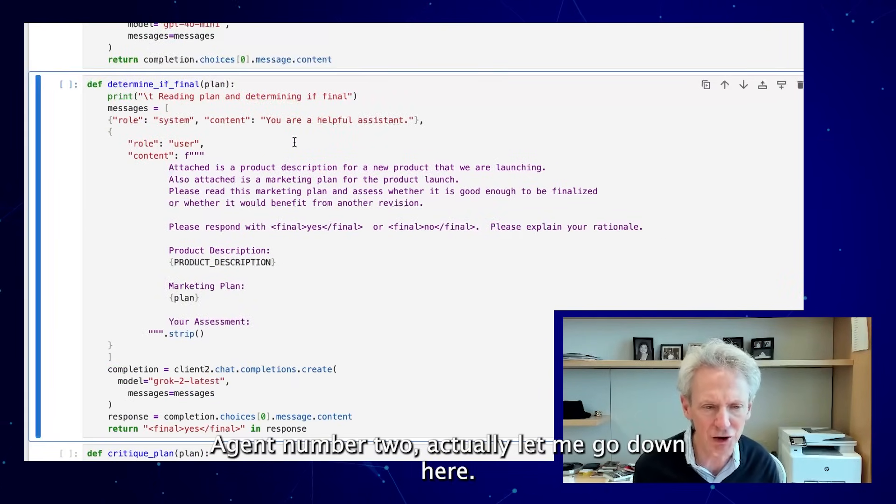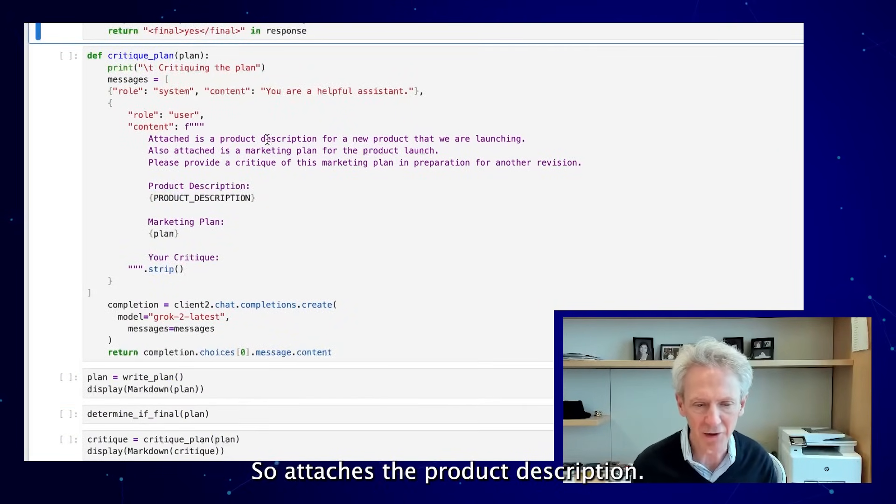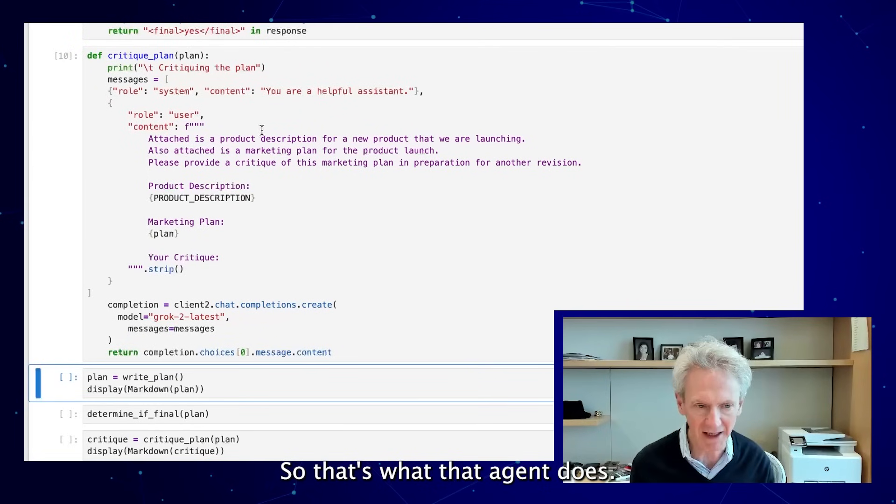Agent number two is the critiquing agent. It attaches the product description, attached is the marketing plan, please provide a critique of that plan. That's what that agent does.